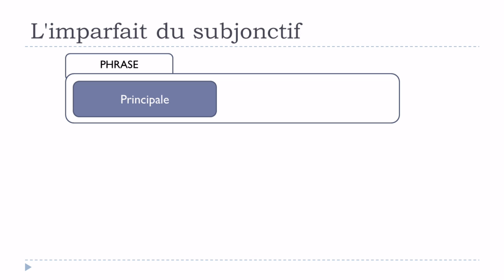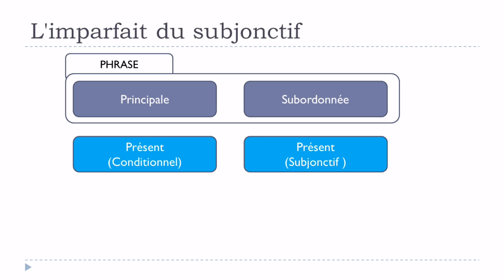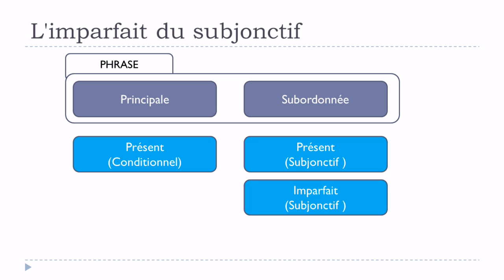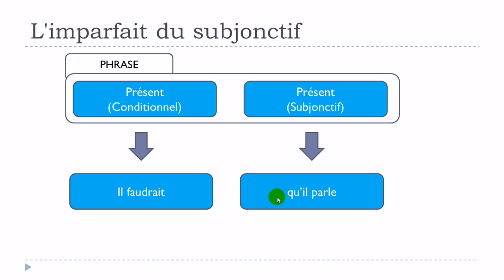Now let's look at another situation. If we have le présent du conditionnel in la principale, then normally we should have le présent du subjonctif or l'imparfait du subjonctif in la subordonnée. However, in most cases the imparfait du subjonctif form won't be used. People stay with présent du conditionnel and présent du subjonctif — for example: il faudrait qu'il parle, where qu'il parle is the subjonctif présent.